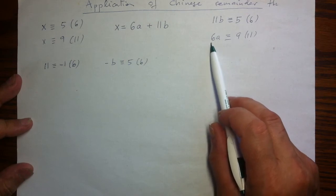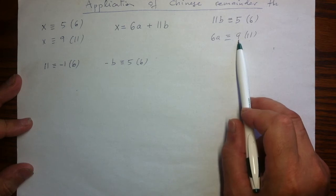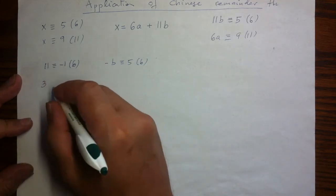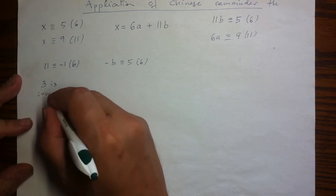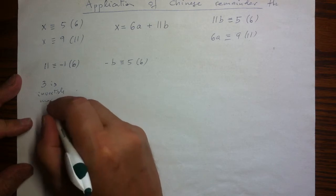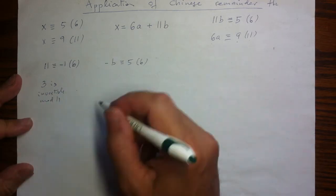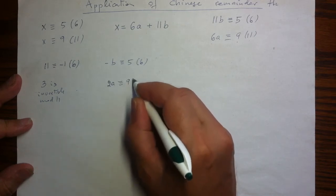And 6 is a product of 2 and 3. And 9 is a product of 3 and 3. And 3 is invertible. So 3 is invertible mod 11. And so I can cancel it out from my equation. I have 2a congruent to 9 mod 11.